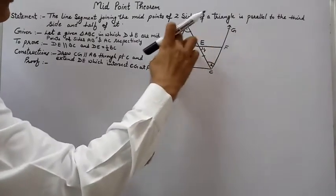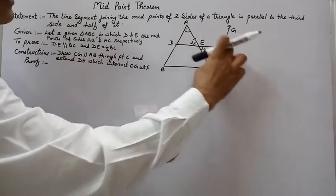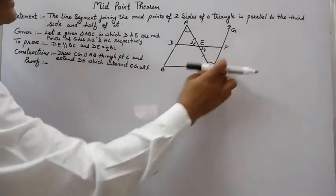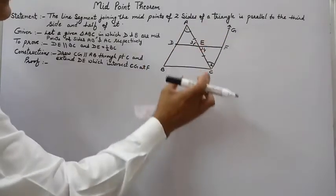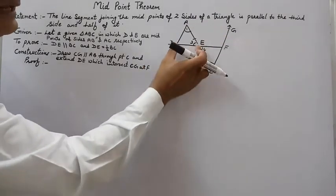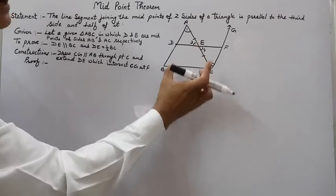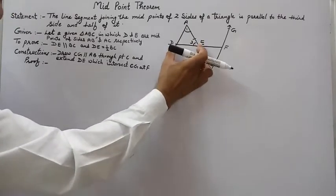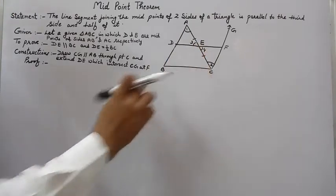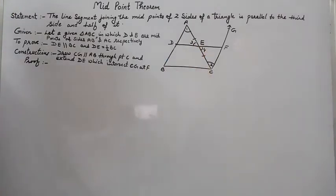If BCFD is proved to be a parallelogram, then automatically DE will be parallel to BC, because opposite sides of a parallelogram are parallel. This is how we prove the first part.